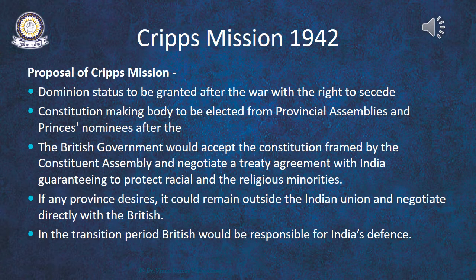The defects in the Cripps Mission resulted in its non-acceptance by both Congress and the Muslim League. Congress passed a resolution in April 1942 rejecting the proposals on two main grounds. First, the Cripps Mission provided for separation from the Indian Union, which would mean the wrecking of Indian unity. Second, participation in the constituent assembly was considered highly undemocratic. On these two grounds, Congress rejected the Cripps Mission, whereas the Muslim League rejected it by stating that one Indian Union for two principal nations would not be accepted.